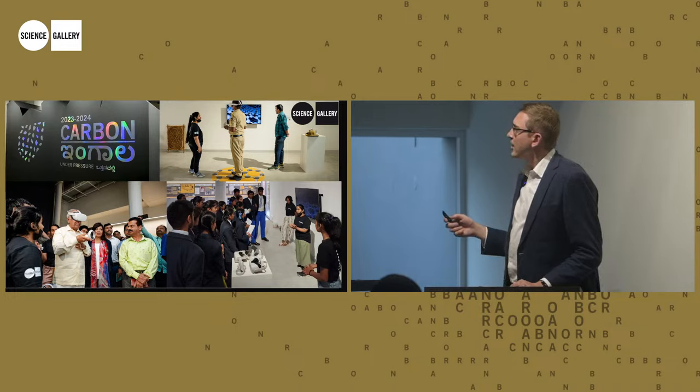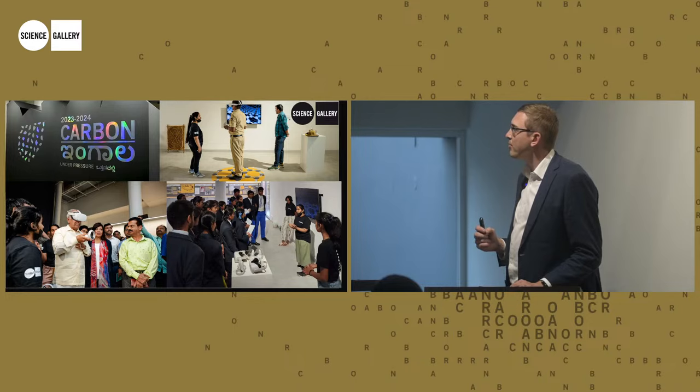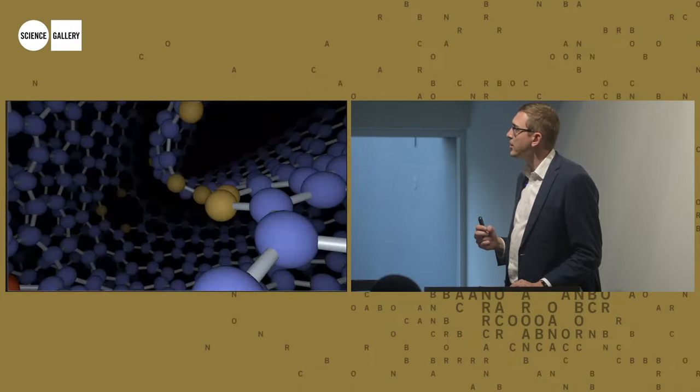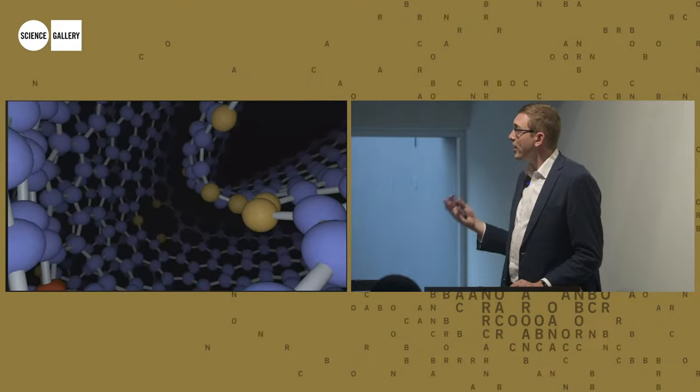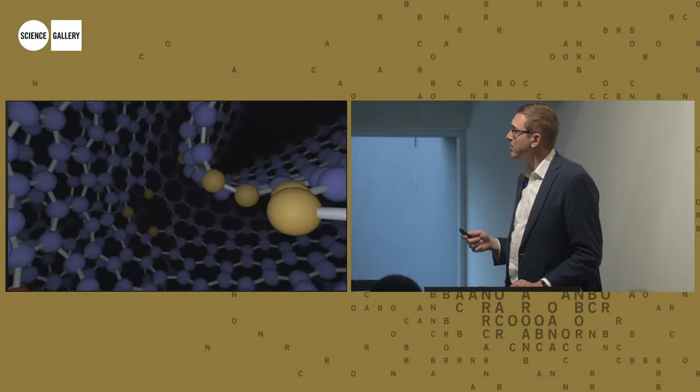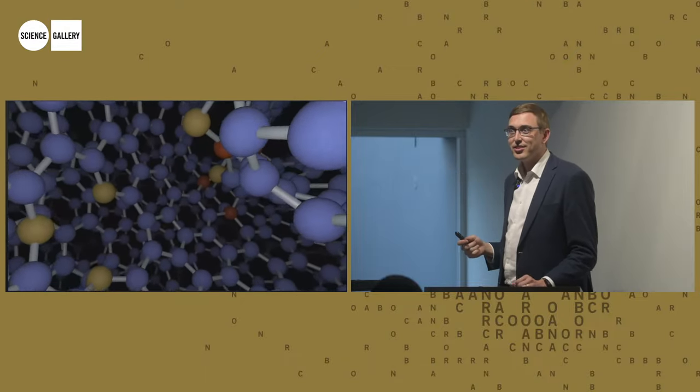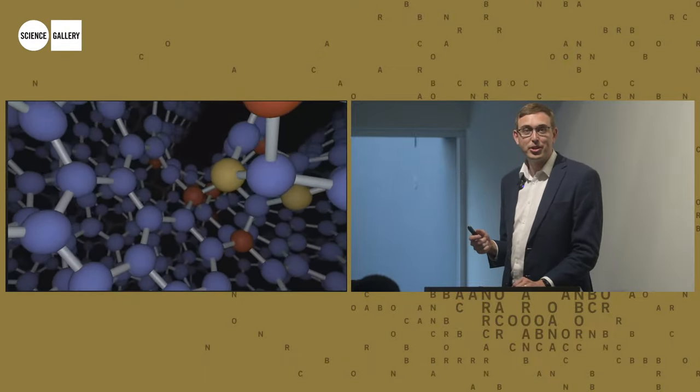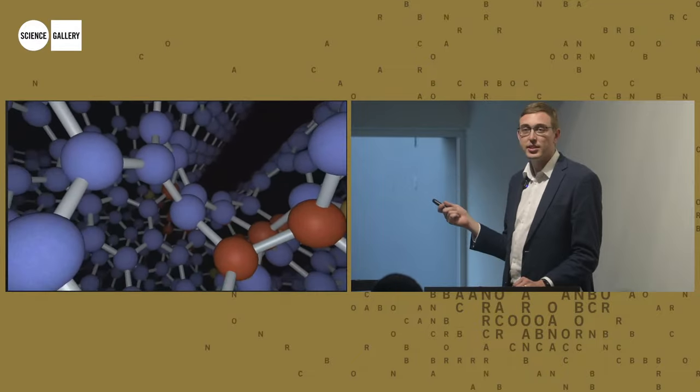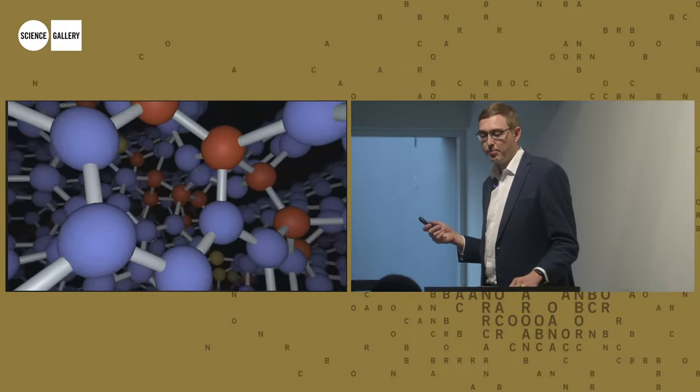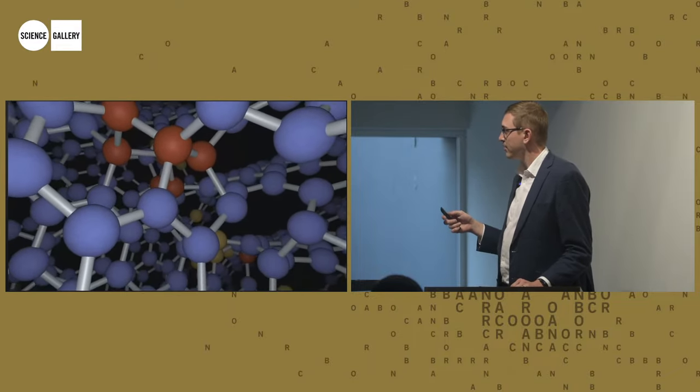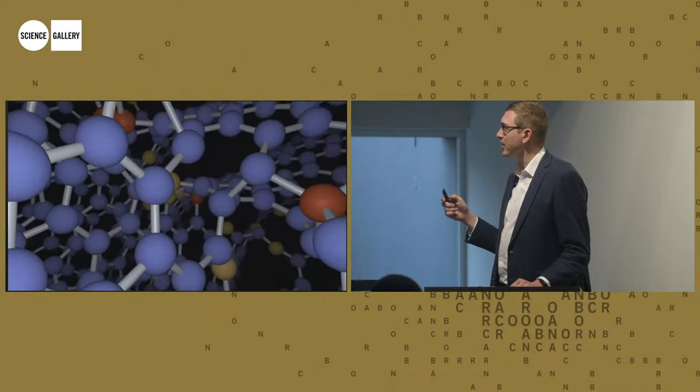This here is a view inside one of the models, so this is actually a model of charcoal which is a way that we can actually sequester carbon. You can actually zoom around with the joysticks and go wherever you want in the model. There are actually a million carbon atoms in these models and they're some of the most complex structures that we know of in carbon material science.